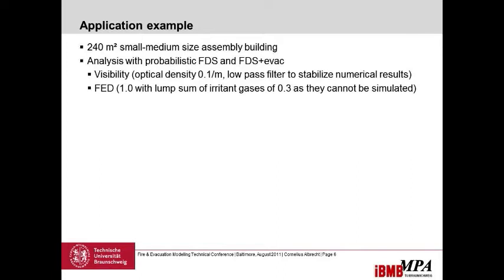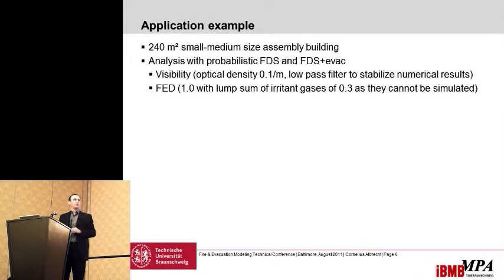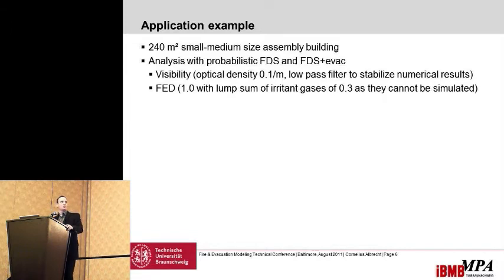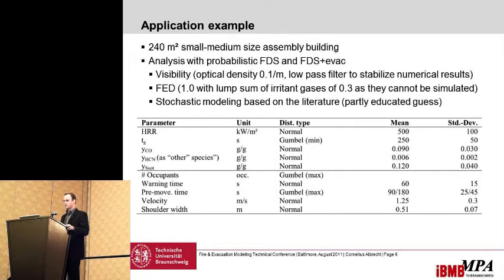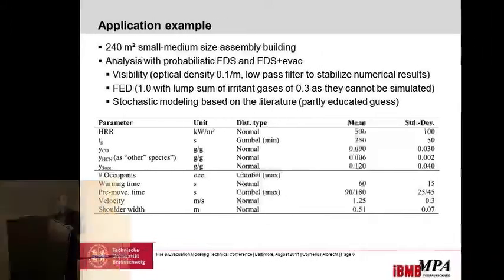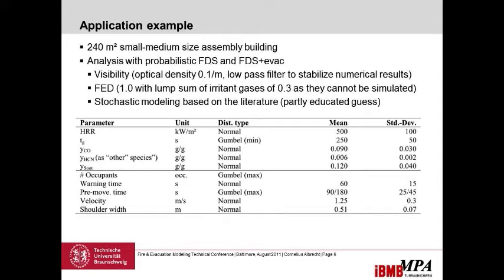The probabilistic CFD analysis used the Fire Dynamics Simulator for CFD and FDS+EVAC for evacuation. The threshold for visibility is an optical density of 0.1 per meter, and I applied a low-pass filter to stabilize the numerical results because they were very unstable — the results from FDS go up and down, possibly due to numerical issues. I also used a fractional effective dose threshold of 1.0, with a lump sum of 0.3 for irritant gases included because we can't currently simulate them. The stochastic modeling is partly literature-based and partly an educated guess, since data is absolutely missing — something we need to work on.